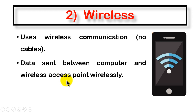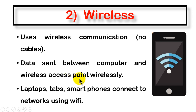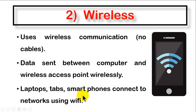The wireless access point is used to connect your devices to other devices. Examples of devices that use wireless communication include laptops, tablets, and smartphones — all these devices connect to networks using Wi-Fi. So Wi-Fi is what helps our devices to be connected by wireless communication.